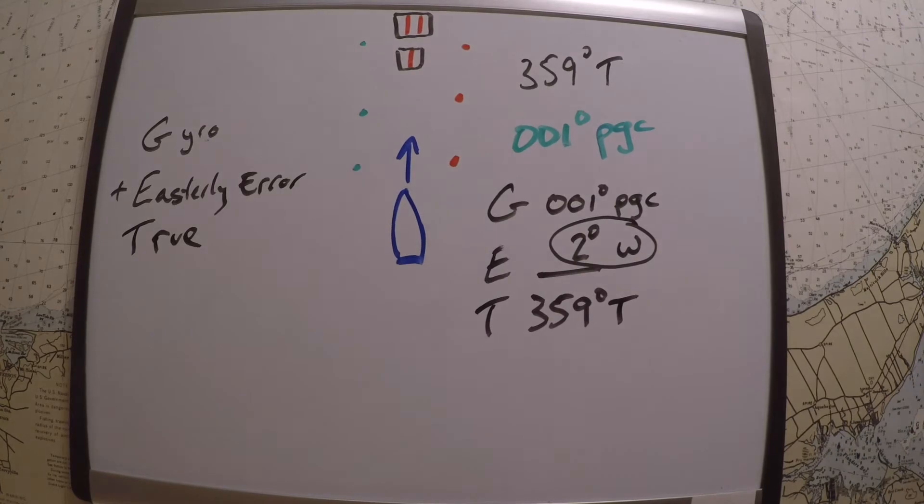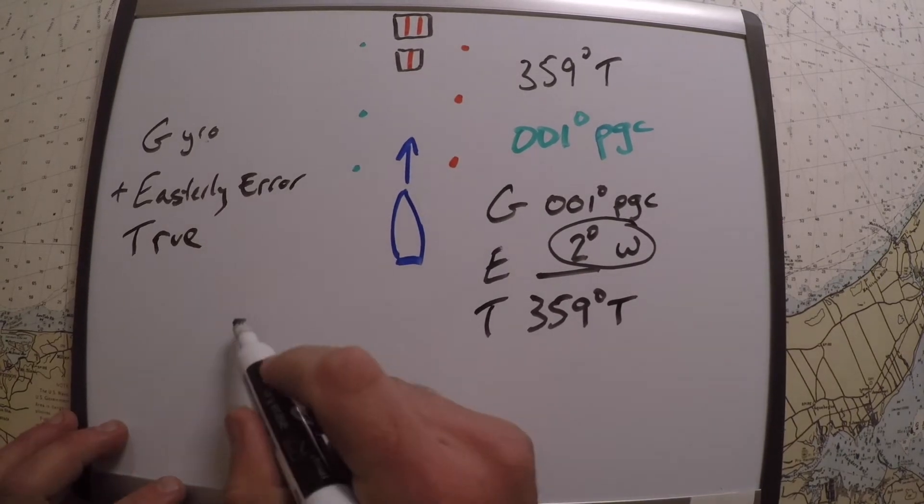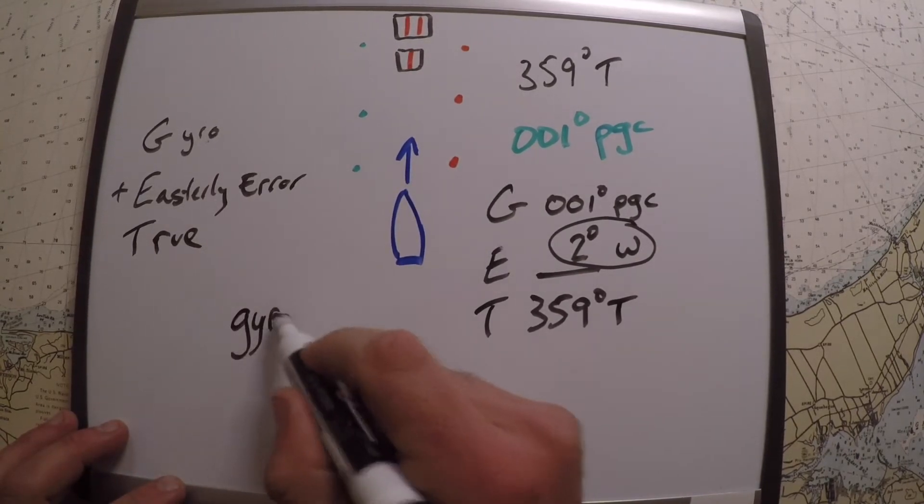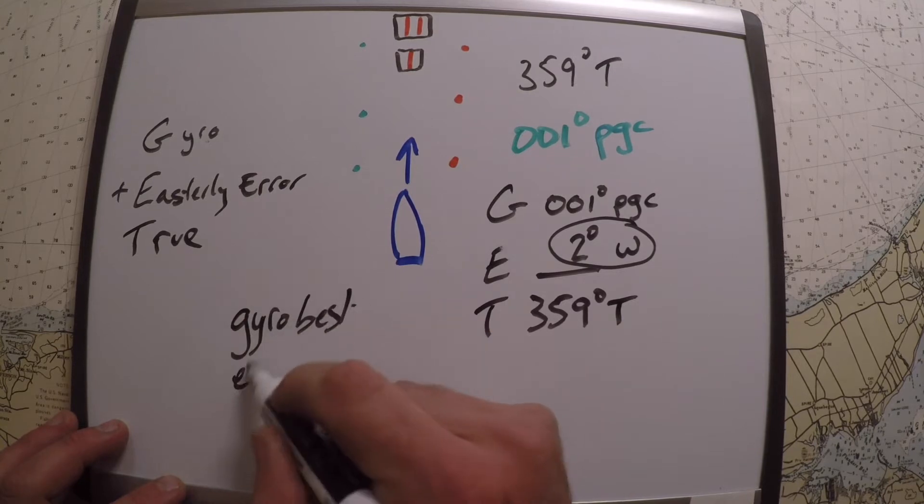So the memory aid just is a way for you to remember the GET, but in this case our answer is going to be two degrees west. And then there's another memory aid you can use in this case, which is: Gyro Best, Error West.